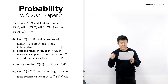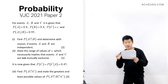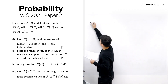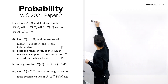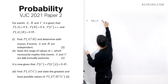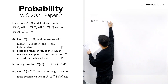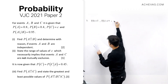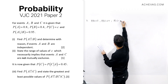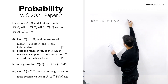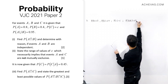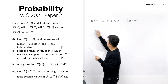We are given three events A, B, C. Probability of A is 0.8, probability of B is 0.4, probability of C is unknown, and the probability of A union B is equal to 0.95. So part one...